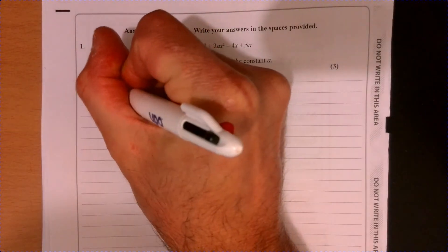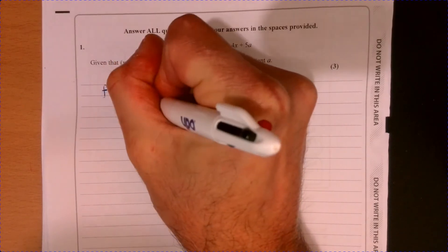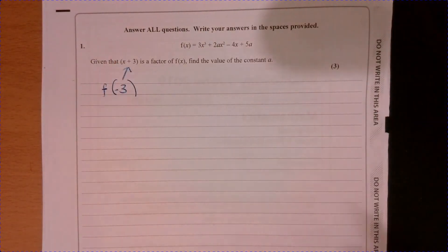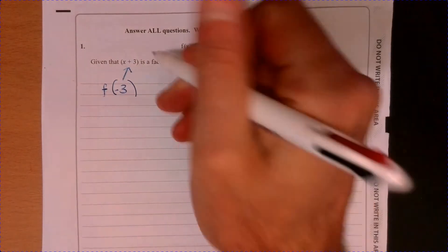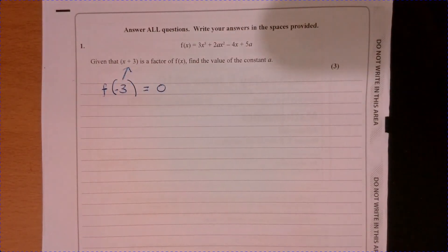So therefore, we should know from our factor theorem that if I sub in minus 3 into this, then the answer should be equal to 0. So that's a key bit of information we need to know.